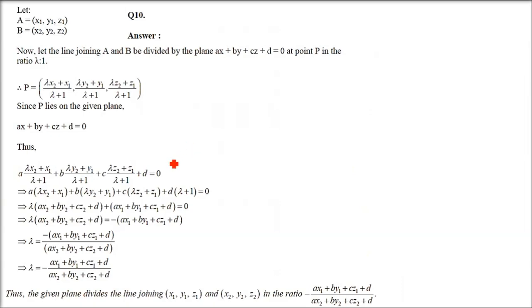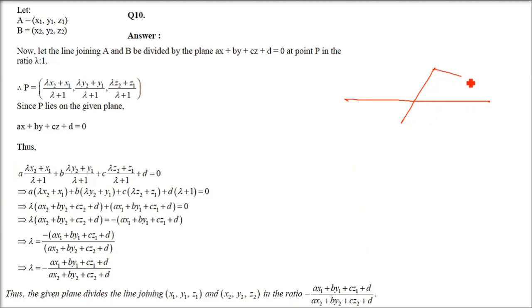This is question number 10. Show that the plane ax + by + cz + d = 0 divides the line joining the points (x1, y1, z1) and (x2, y2, z2) in a given ratio. Same thing we are going to do here — we will have a line and then a plane in between. The ratio is negative, so it is dividing externally.